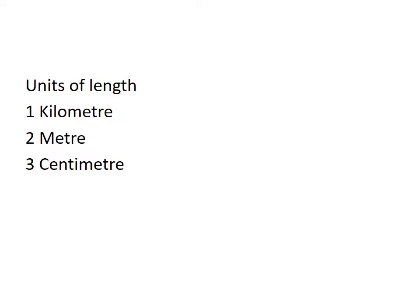All three units have the word 'meter': kilometer, meter, and centimeter. When we add 'kilo' before meter, it means one thousand times the meter. When we add 'centi' before meter, it means one hundredth of the meter.